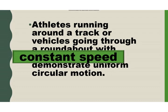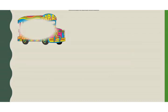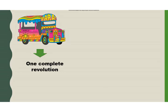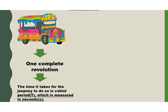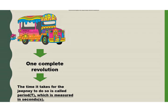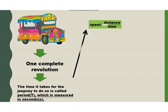Consider a jeepney making a complete revolution around Mabuhay Rotonda. The time it takes to do so is called the period, symbolized as capital T. Period is measured in seconds. Recall the equation for speed of bodies along a straight line — from your Grade 7 lesson, speed is equal to distance over time, or average speed is equal to total distance over total time.